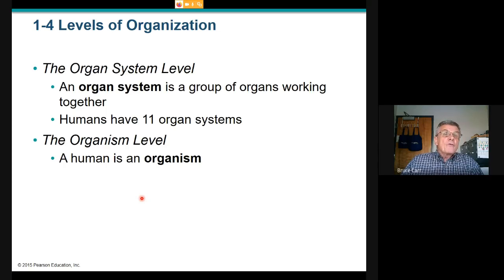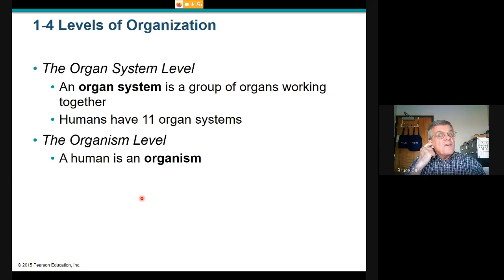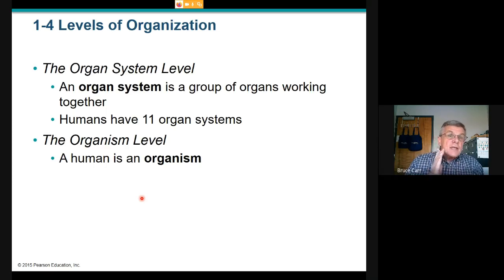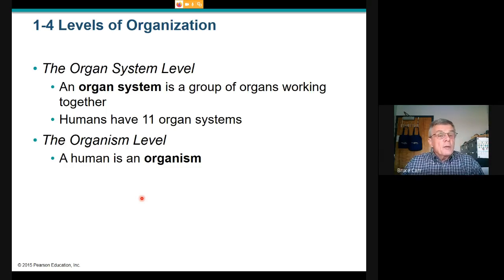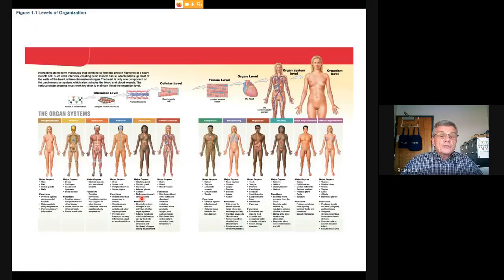Ten of the 11 organ systems are required for a healthy life. Only one — the reproductive system — can be functionally removed and the organism still lives a long, healthy life. We routinely use reproductive system removal in managing domesticated and agricultural animals. Put all organ systems together and you get an organism.